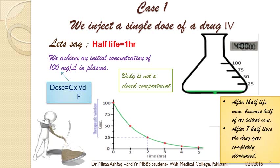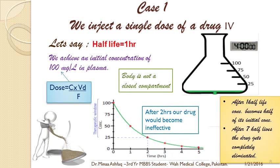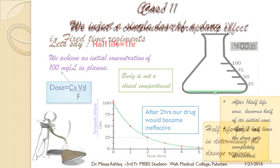One more thing to mention: let's say the therapeutic window of our drug is from 25 to 150. This means the drug becomes ineffective below 25 and toxic above 150. We can see that a concentration of 25 is achieved after two hours, meaning after two hours the drug would become ineffective. So the doctor should know after what time his drug would become ineffective — not just be satisfied with giving it.